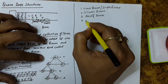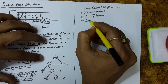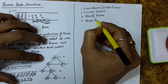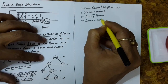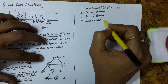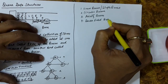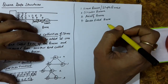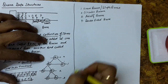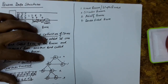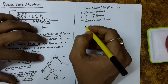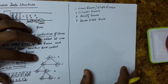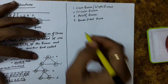Another type is the double-ended queue, wherein we assume that there are two ends and at both ends the services are offered. We will discuss about the linear queue in this lecture.